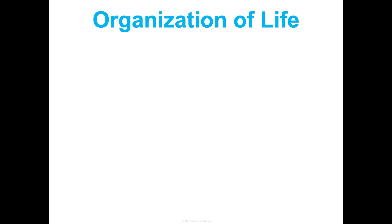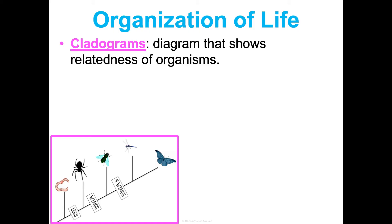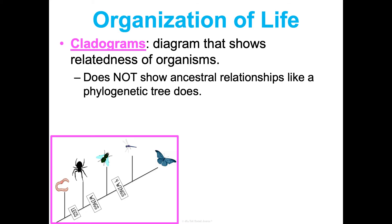Two types of diagrams can help us classify and organize organisms. First, cladograms are diagrams that show the relatedness of organisms. They may look like a phylogenetic tree, but the difference is that a cladogram does not show ancestral relationships — we're just showing relatedness, not necessarily whose ancestors are whose. For example, looking at five organisms — a worm, spider, fly, dragonfly, and butterfly — we might note that everything from a certain branch up has legs, then wings, then four wings, organizing them by characteristics rather than evolutionary history.